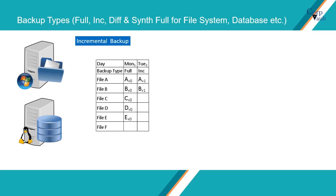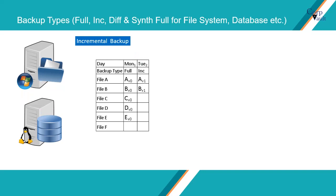When incremental backups start, it will run a scan and check which files have been created, modified, or accessed since the last backup, and then catalog them for backup. In our example, files A and B are modified, hence the changes made for those two files are backed up to backup media.